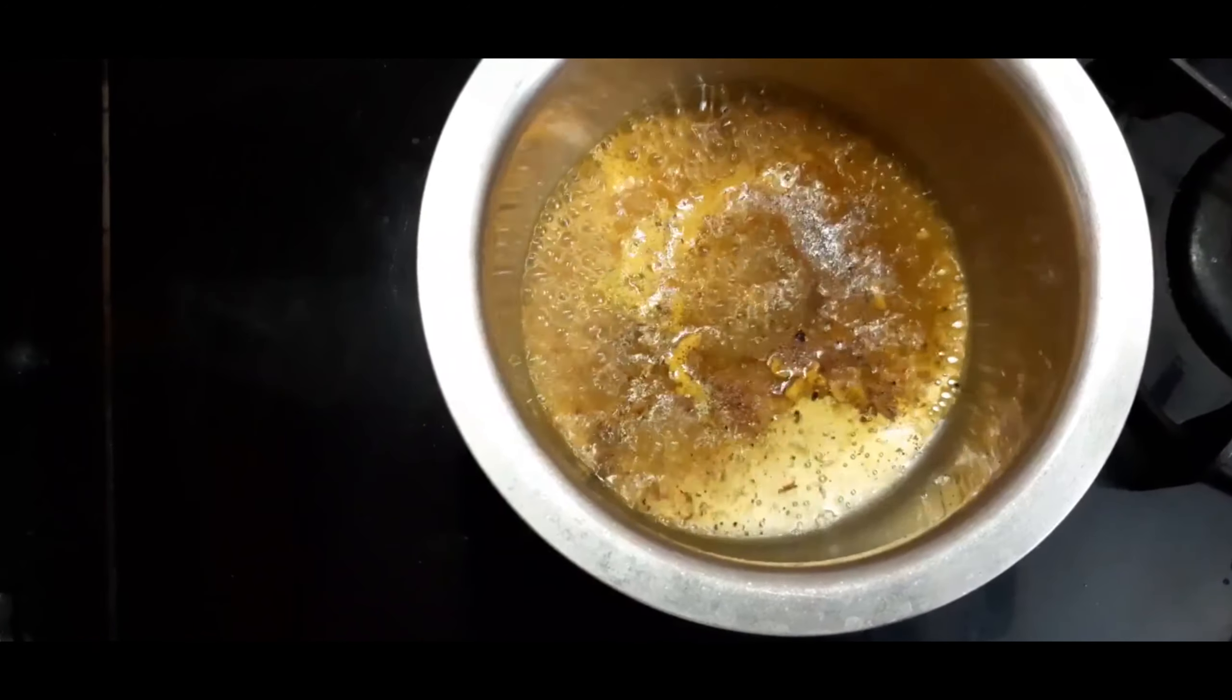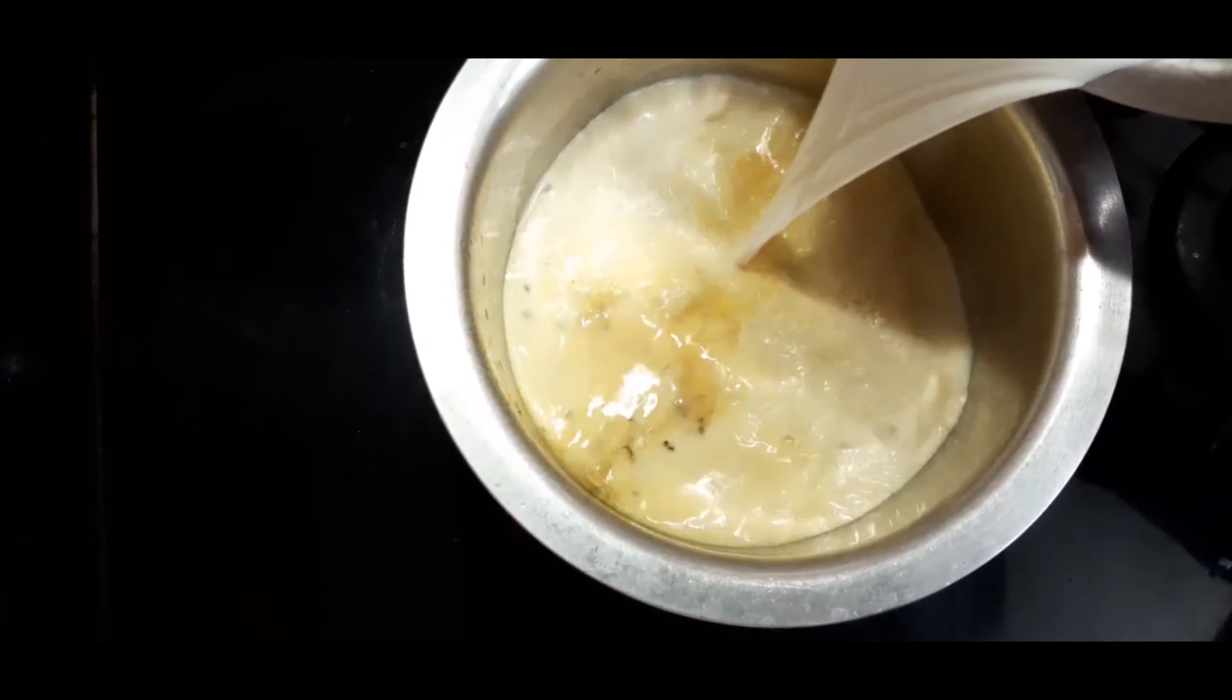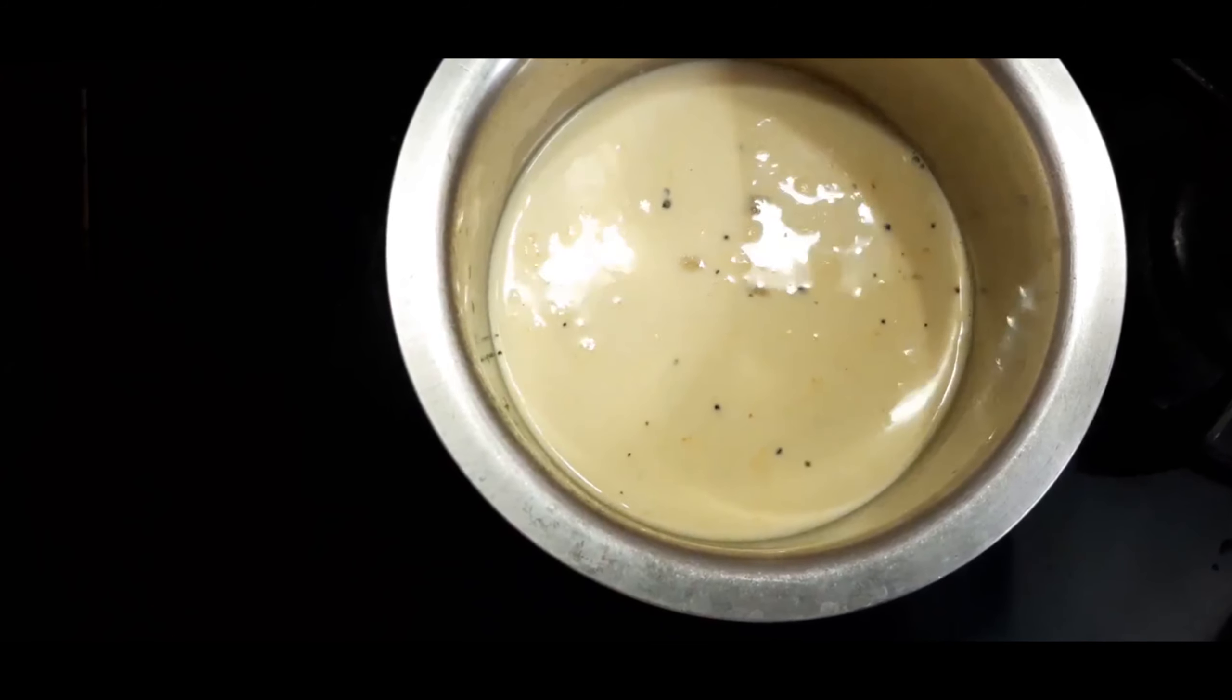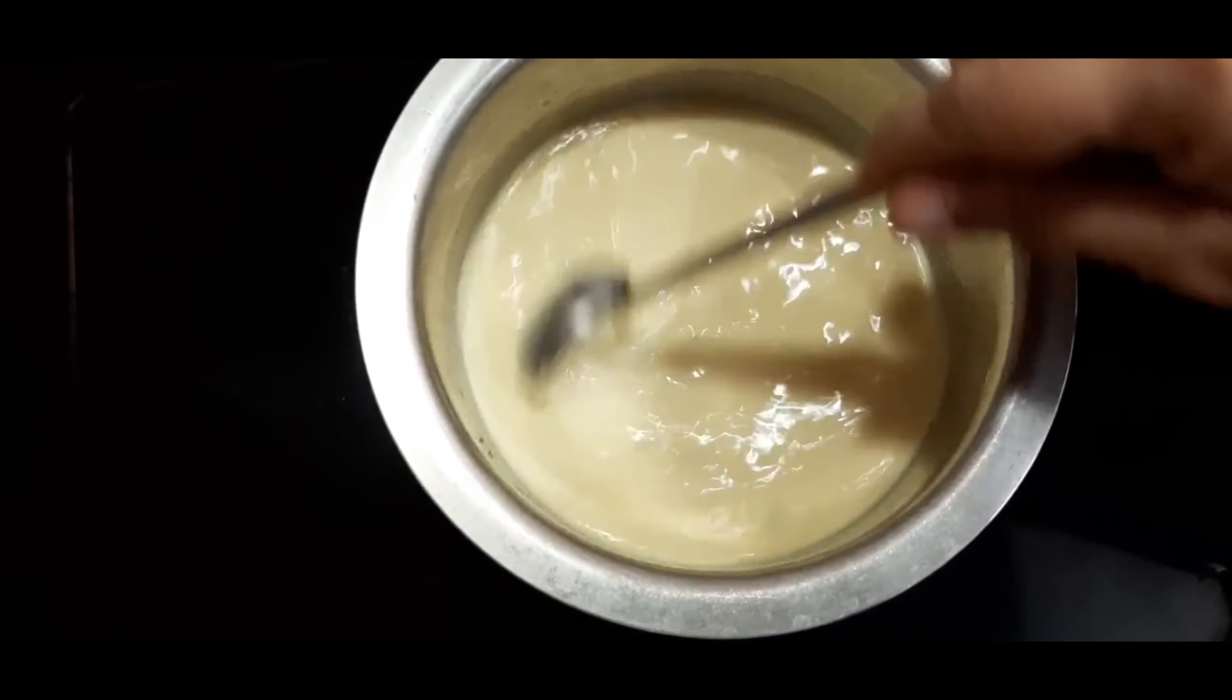Reduce the flame. Add half the quantity of milk and keep boiling for another five minutes. Scrape the sides with a ladle.